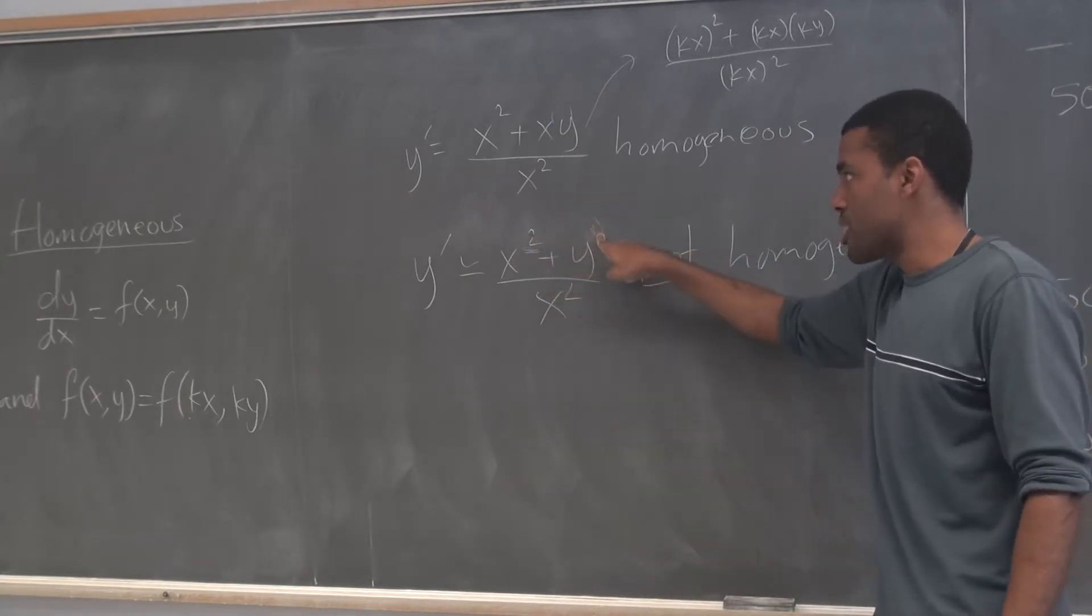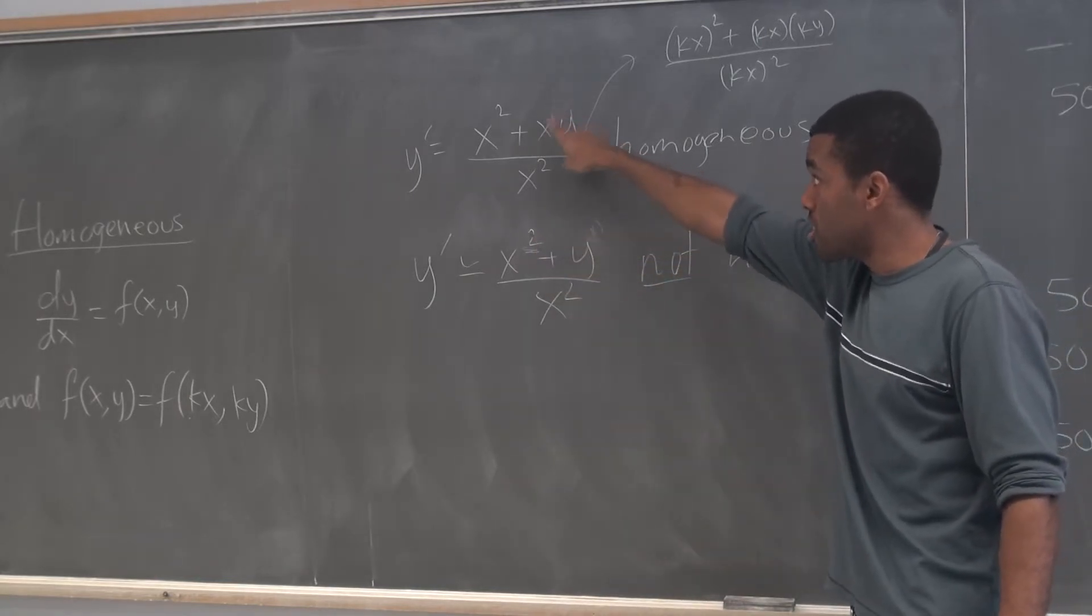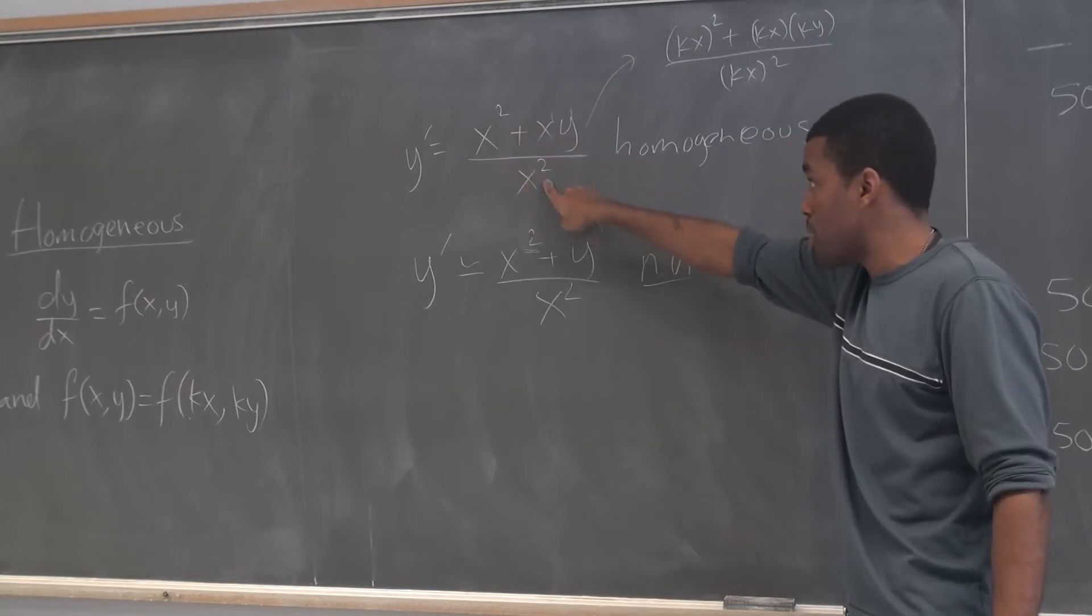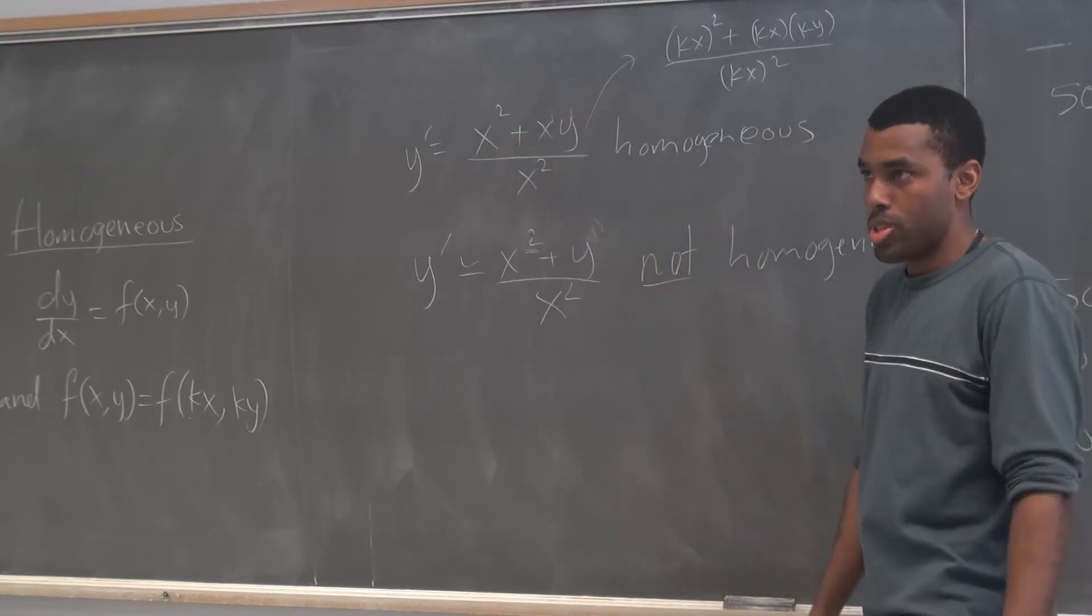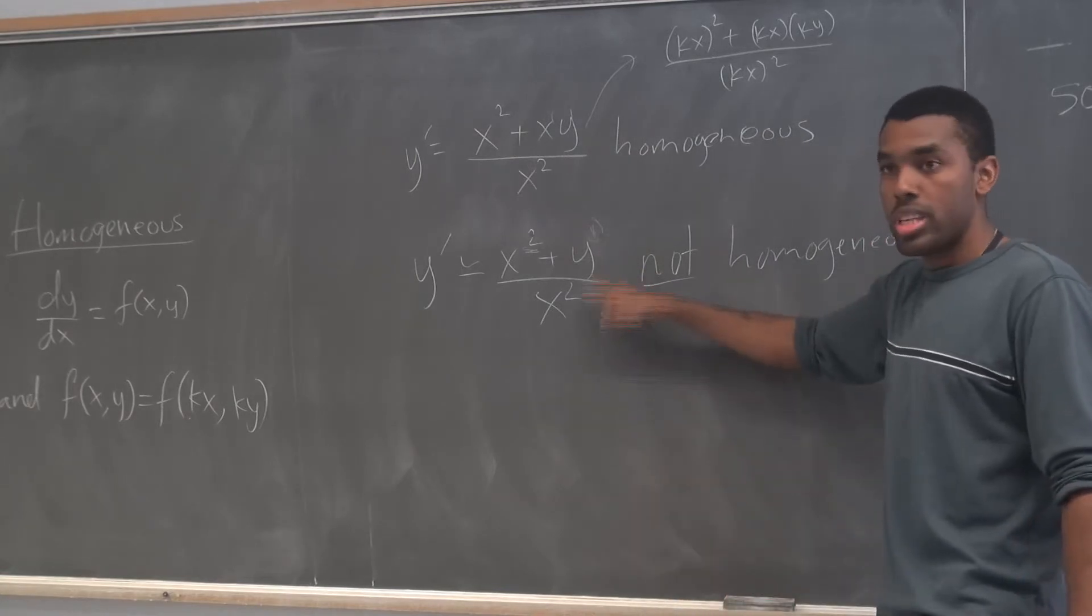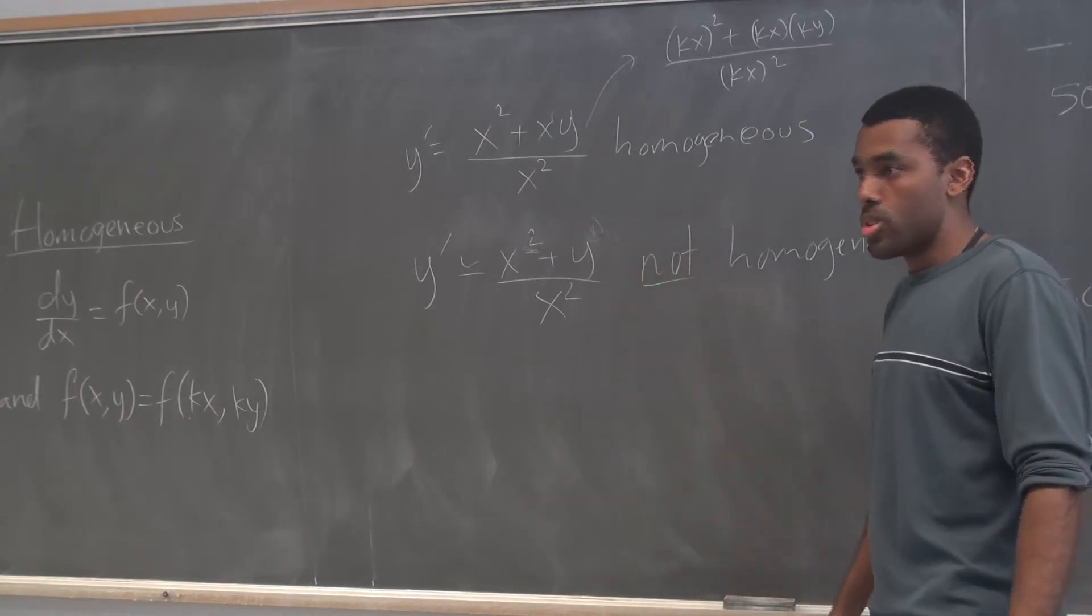The power here is a 2, the power here is a 1. The sum of the powers here is a 2, the power there is a 2. That's fine. The bottom is a 2. The power of the degree of the top and the bottom is the same, so it's homogeneous. It wasn't the case here. So it's not homogeneous.